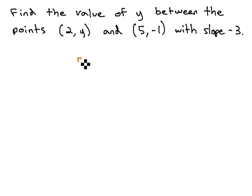We recall the slope formula is m equals y2 minus y1 over x2 minus x1. To help us fill this formula in, let's clearly label each point and the slope.